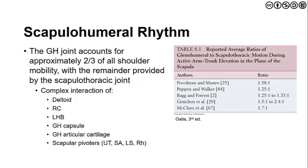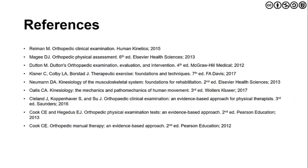Because of these force couples, there can be altered contributions between the scapulothoracic joint and the glenohumeral joint. With that, we conclude our review of the anatomy, kinesiology, and biomechanics of the glenohumeral joint and shoulder as a whole. For further information, Mike Raymond's text, McGee's, Mark Dutton's texts, as well as Newman and Oates' texts on kinesiology and others listed are great resources. Thanks for listening — let me know if there are any questions.